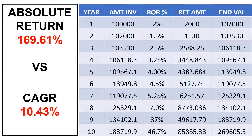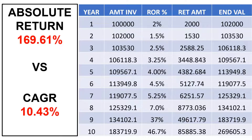So finally, when we compare absolute return to CAGR, it is 169.61% to 10.43%. And although absolute return looks very impressive, it is irrespective of time, and the reality is actually the CAGR of 10.43%. So before investing, we need an investment which has an impressive absolute return as well as CAGR compared to its peers.